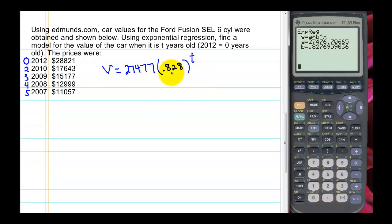If you remember, since this value here, 0.828, is less than 1, this is exponential decay. And if we wanted to determine our depreciation rate, our percent decrease per year, remember we subtract that number, that B, from 1. And we get here 0.172, which would be 17.2%. So our car value is decreasing in value by 17% each year.